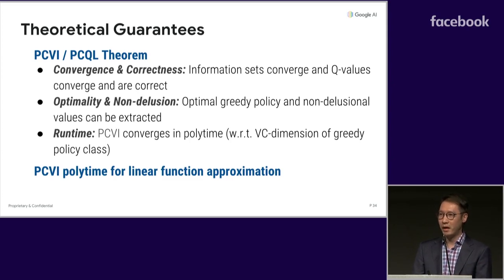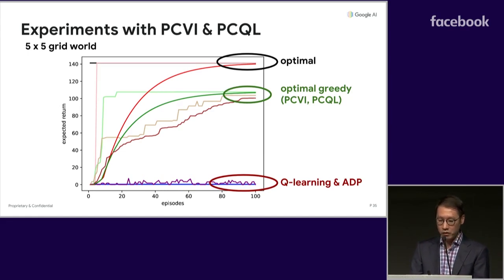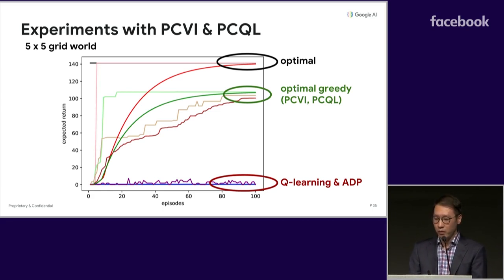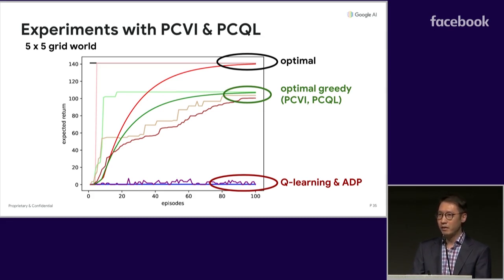The foundations are solid, but what can we say about performance in practice? In some cases, being non-delusional can have a dramatic impact. We ran our algorithms on simple grid world domains, which can be very hard with randomly generated features and linear function approximation. On a five-by-five grid world with sparse rewards at the corners, unconstrained tabular Q-learning and value iteration converge to the optimal value estimates, as expected. PCVI and PCQL with linear function approximation quickly converge to the constrained value estimates and even more quickly converge to the greedy optimal policies. By contrast, not accounting for delusion causes both Q-learning and value iteration with the same approximator class to fail miserably — their induced policies accrue effectively zero reward.